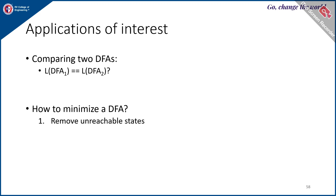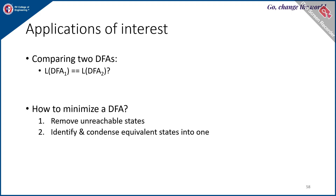The first step is to remove the unreachable states. The states which are not reachable from the start state are called unreachable states, and such states must be removed first.